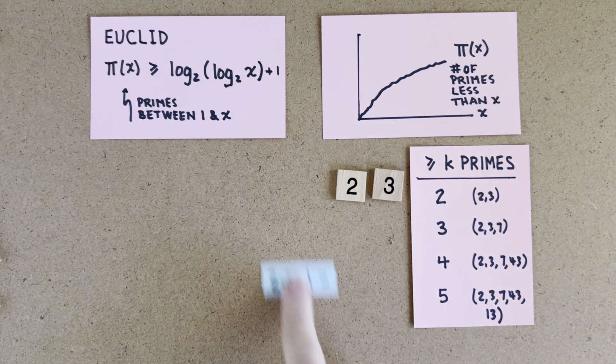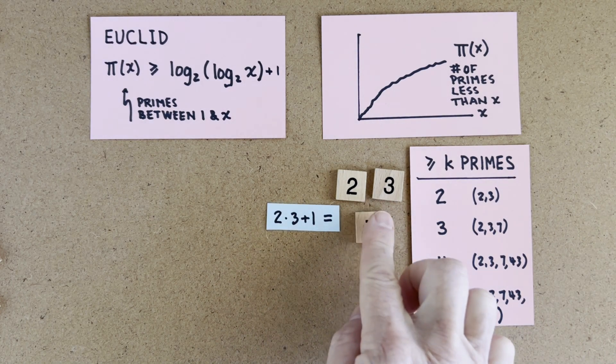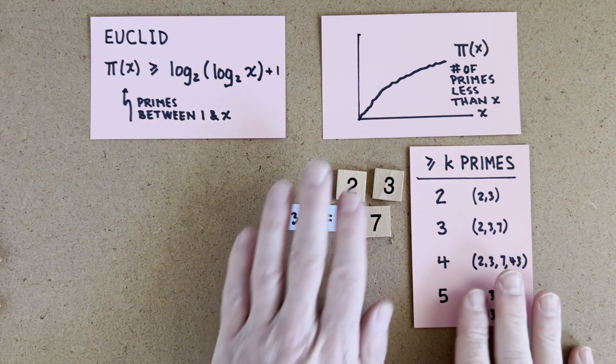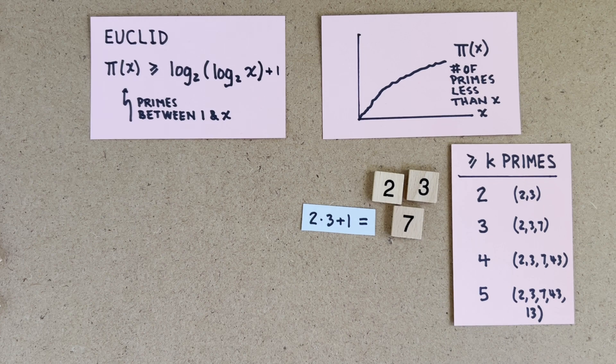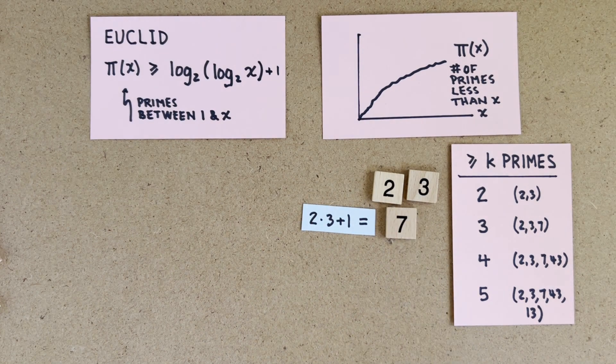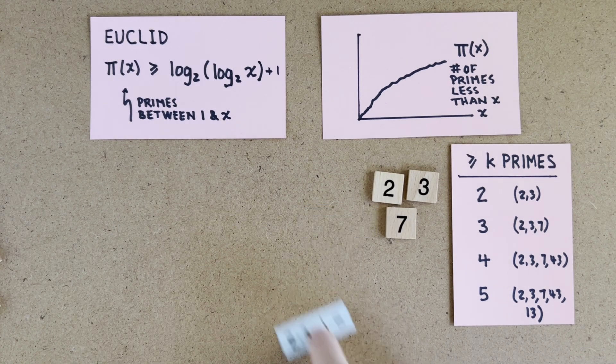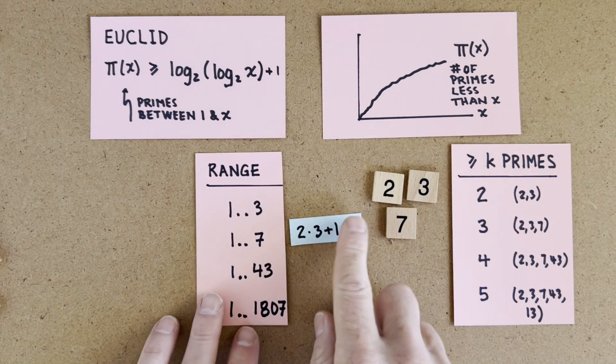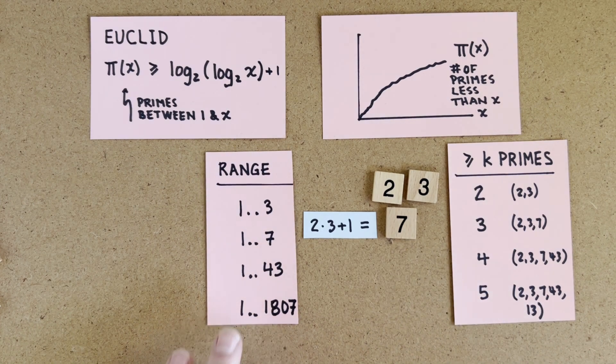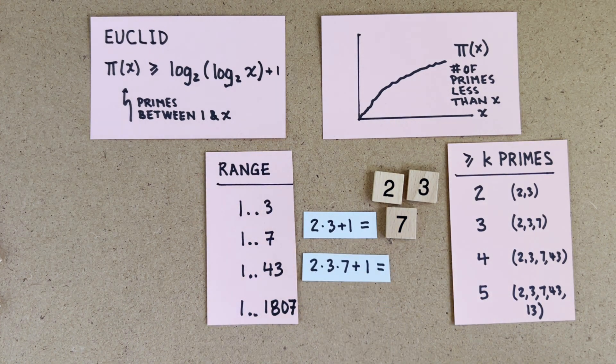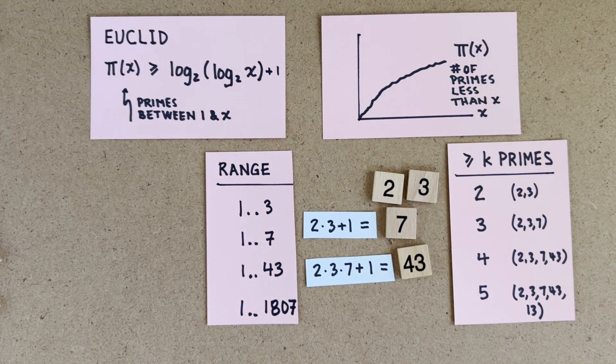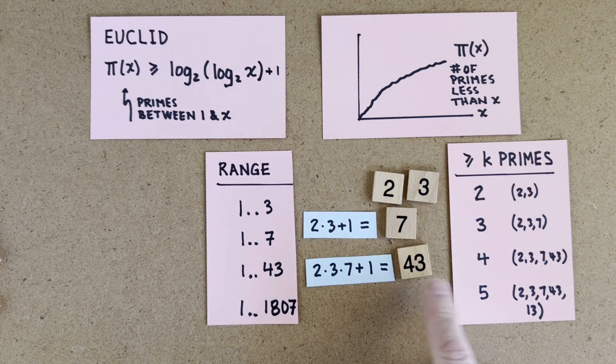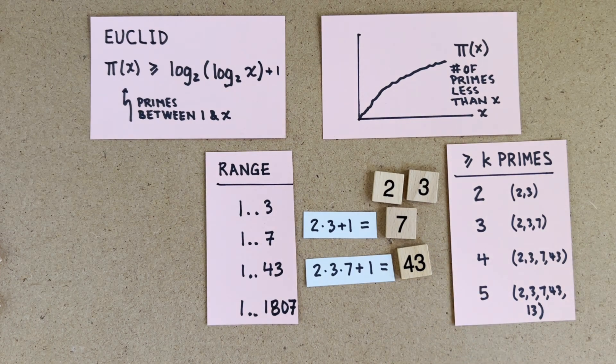Now multiply 2 by 3 and add 1. That's 7, which isn't divisible by 2 because it's 1 more than a multiple of 2, and also isn't divisible by 3. So 7 is either prime or it's divisible by some prime other than 2 or 3. In any case, the Euclid factory has just generated some new prime. Now take 2 times 3 times 7 plus 1 equals 43. That's not divisible by 2 or 3 or 7, so 43 is yet another new prime or a multiple of a new prime.